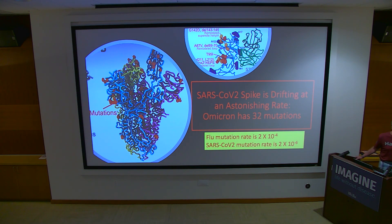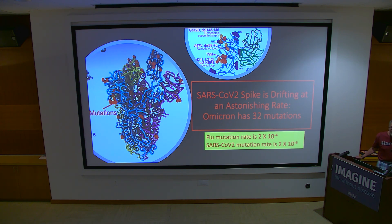SARS-CoV-2 came along and experts on antigenic drift like me thought it wouldn't be a problem with coronavirus because coronaviruses don't drift — that's what we all thought. There were four seasonal coronaviruses and somehow the field missed that they do drift. During COVID, Jesse Bloom had a nice paper showing one seasonal coronavirus is drifting at least as fast as flu.